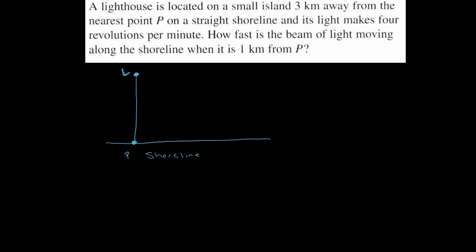Okay, and so the lighthouse is rotating and you can imagine its beam of light tracing a line along the shoreline. So here's a representative beam of light there. Now that beam of light is moving because the lighthouse is rotating, which means if you read the problem, this distance here is varying in this triangle.